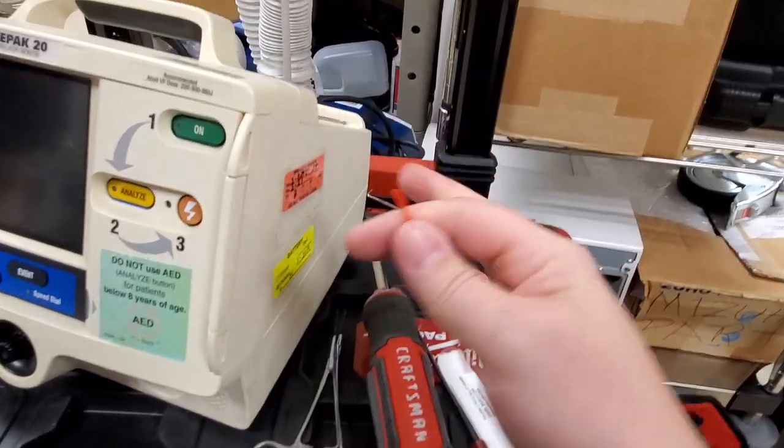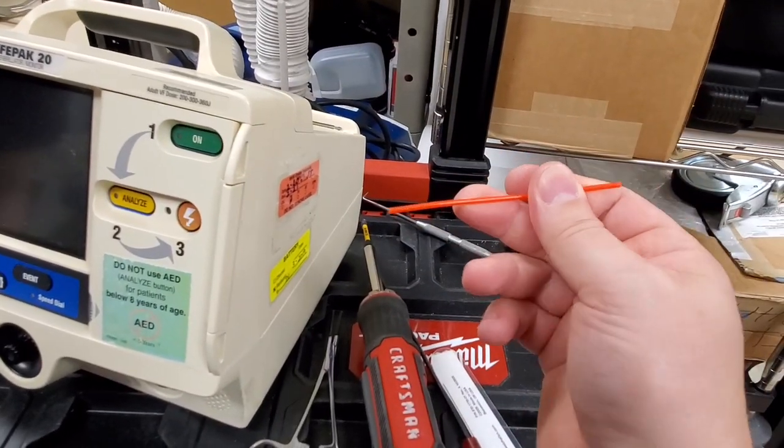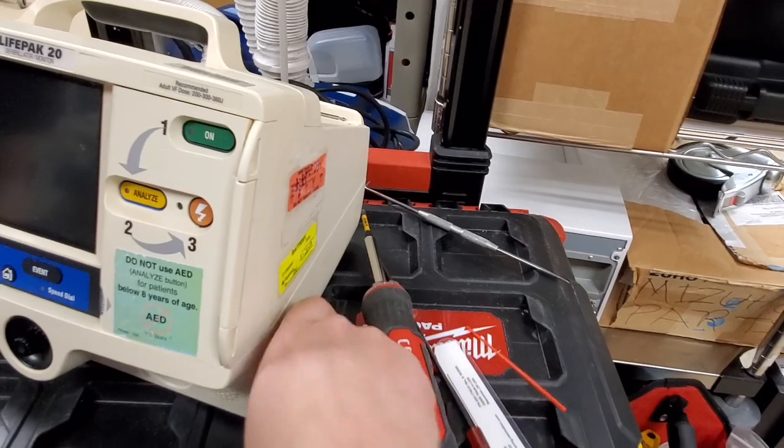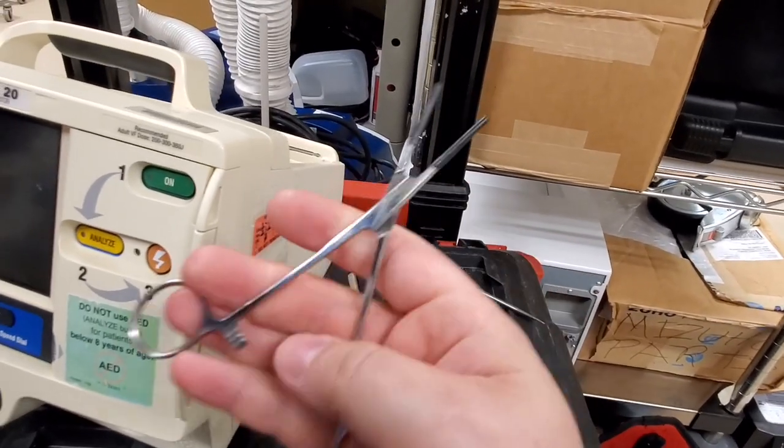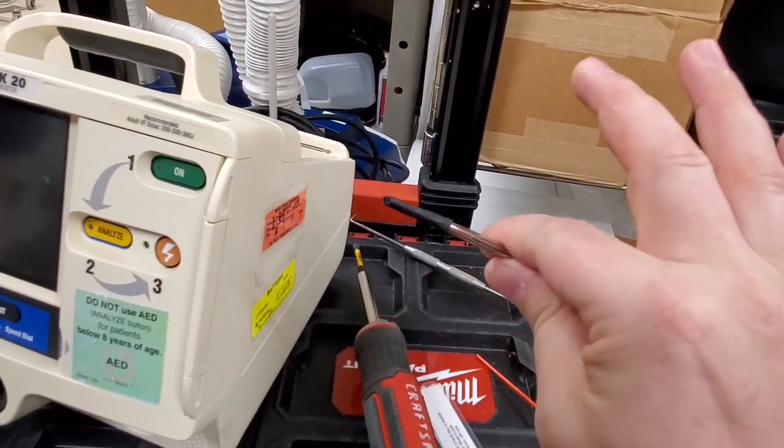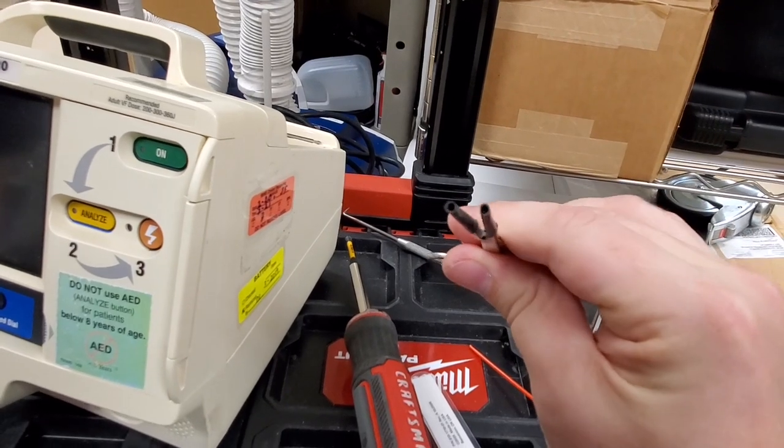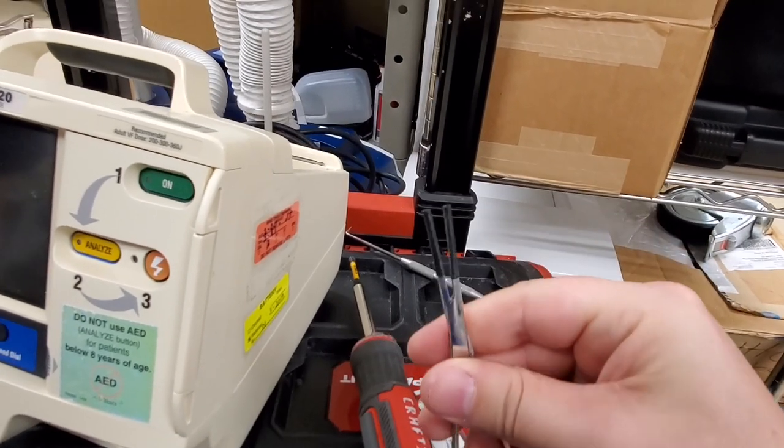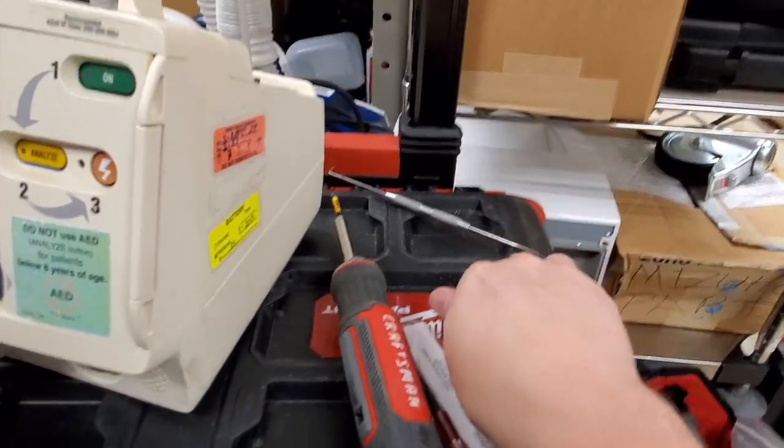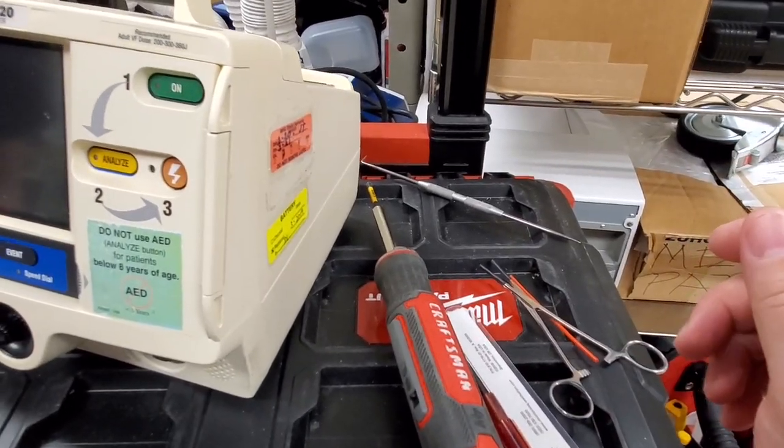Here you can see I got a set of forceps. They're really fine pointed and I also have some shrink tube around the tips. Alright, so let's get into it.